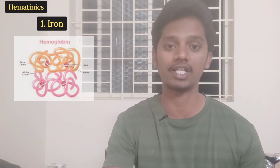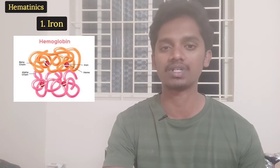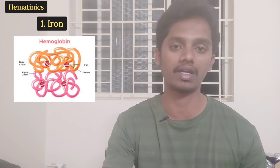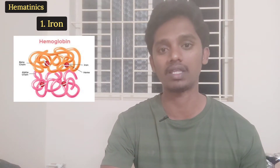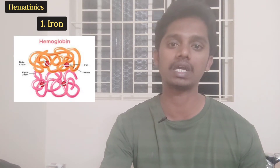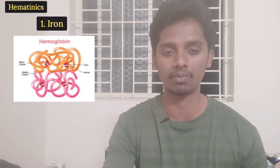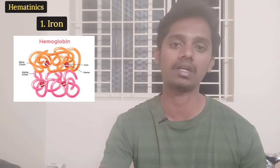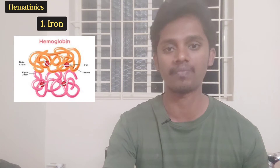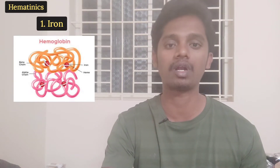First is iron. Iron is one of the essential components required for normal erythropoiesis — that is, RBC formation. In RBC, one of the main components is iron. Each RBC contains lakhs of hemoglobin molecules, and each hemoglobin is made up of iron-containing compounds. That is why iron is a big part of the RBC.